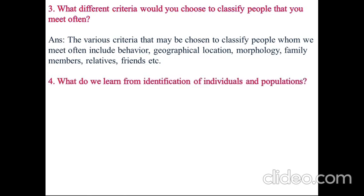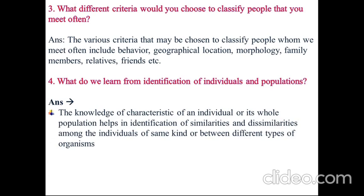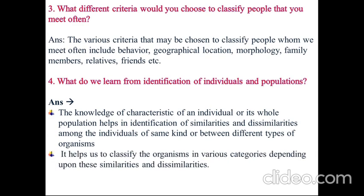What do we learn from identification of individuals and populations? The knowledge of characteristics of an individual or its whole population helps in identification of similarities and dissimilarities among the individuals of same kind or between different types of organisms. It helps us to classify the organisms in various categories depending upon these similarities and dissimilarities.